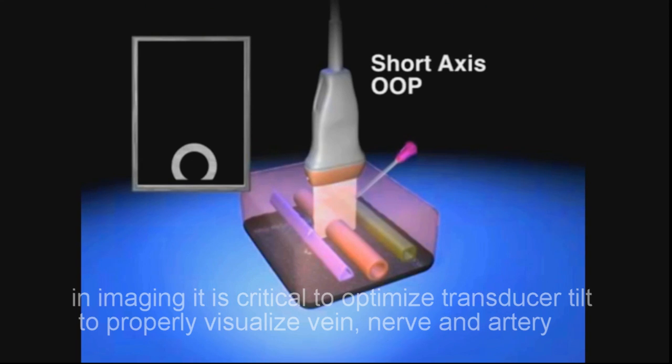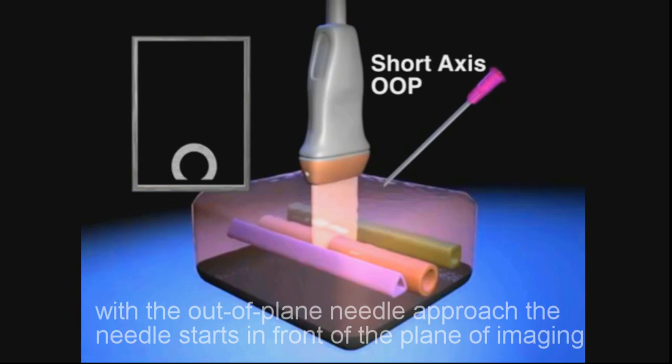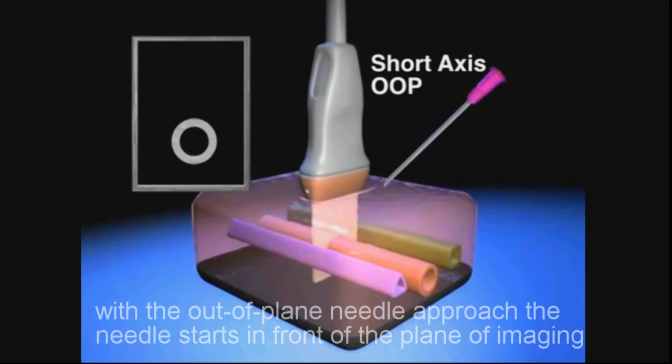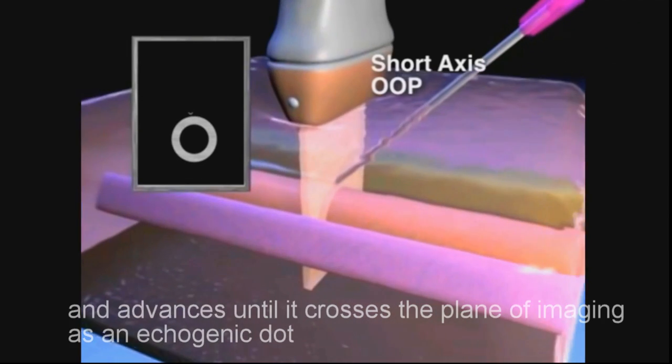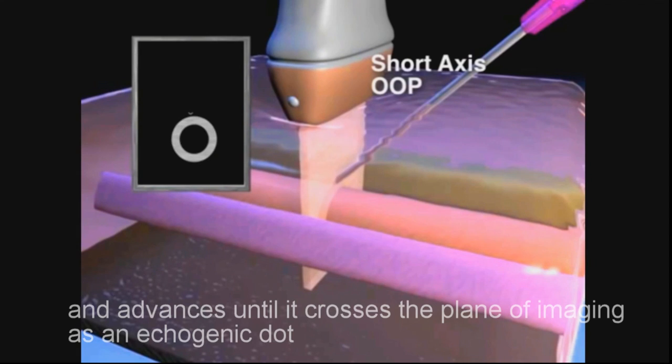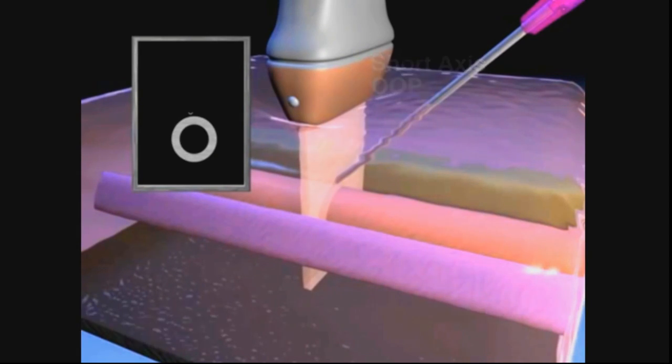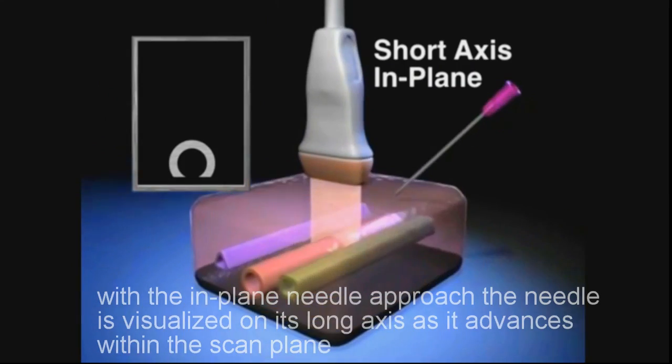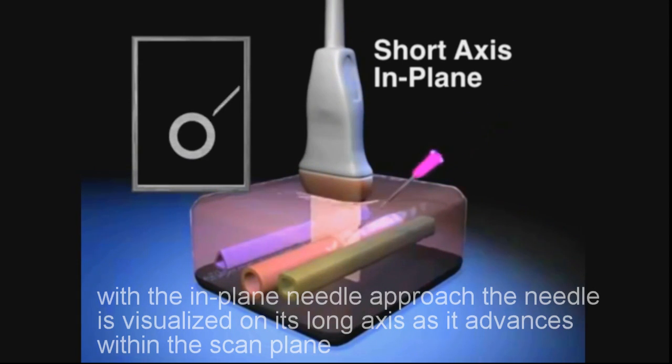With the out-of-plane needle approach, the needle starts in front of the plane of imaging and advances until it crosses the plane of imaging as an echogenic dot. With the in-plane needle approach, the needle is visualized on its long axis as it advances within the scan plane.